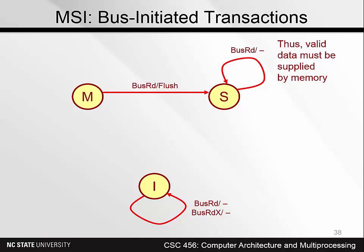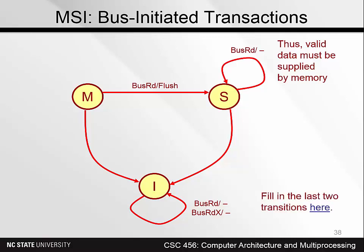If our cache has a block in state M and another processor reads the data, we see a bus read coming in over the bus. Our cache changes its state to S, flushes the block to memory, and the other processor can pick up the block as it goes across the bus. If a bus read X comes in when our cache is in state M, it induces a flush operation. On the other hand, if we are in state S when a bus read X comes in, we just invalidate the block without flushing it, since main memory is already up to date.